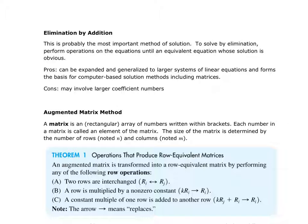Now we're going to talk about the augmented matrix method. A matrix is just an array of numbers within brackets, and each number in there is an element or part of an equation. When we talk about matrix size, we talk about how many rows and how many columns it has. With matrices, we are allowed to interchange rows, multiply rows by a non-zero constant, and add or subtract rows from each other and put that answer into one of the rows.